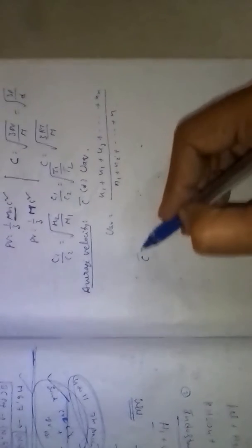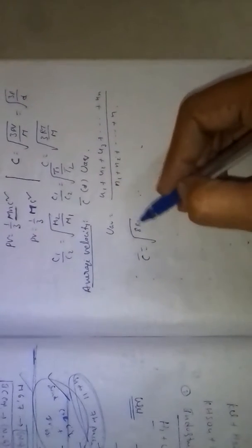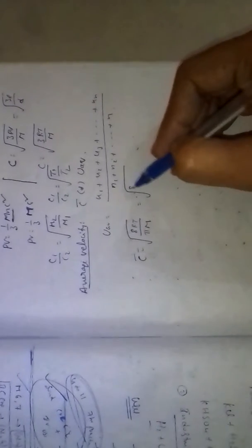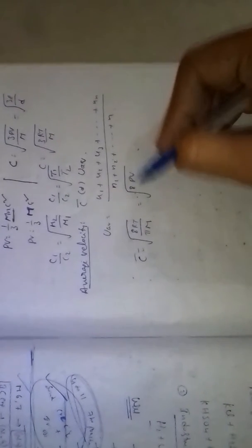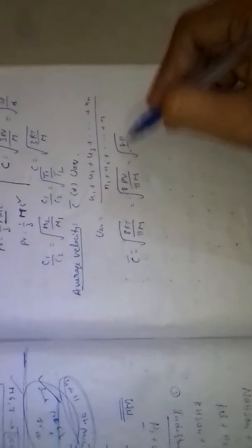For average velocity, the relation is: C-bar equals root of 8RT by pi M, which also equals root of 8PV by pi M, or root of 8P by pi D.